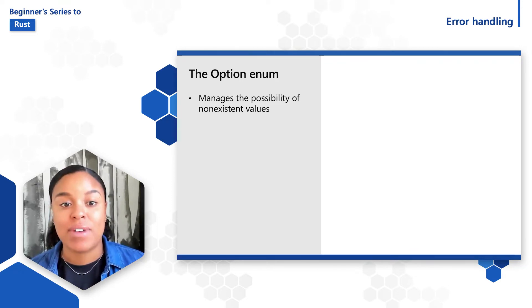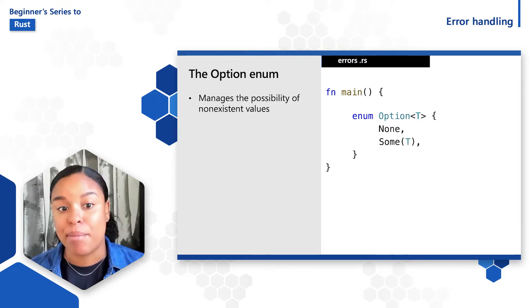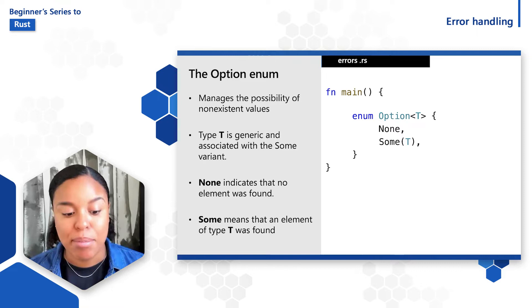The option enum is defined as the following. We have an enum called option T with two variants, none and some. The T part of option T states that the type T is a generic and associated with the some variant. None indicates that no element was found and some means that an element of type T was found.